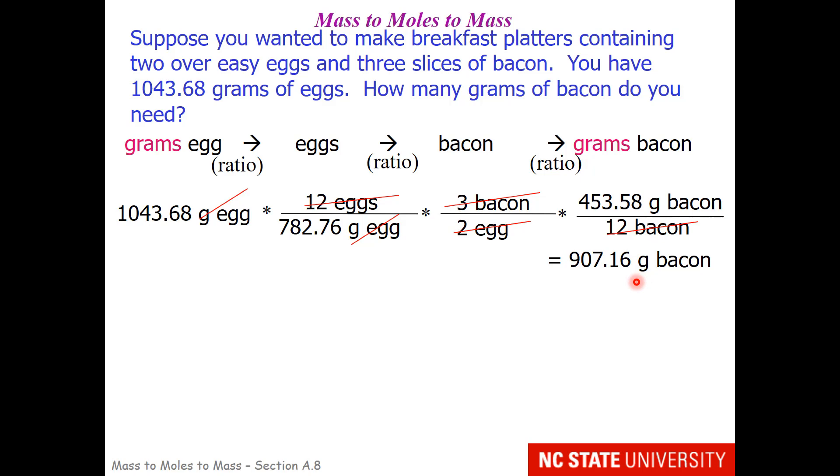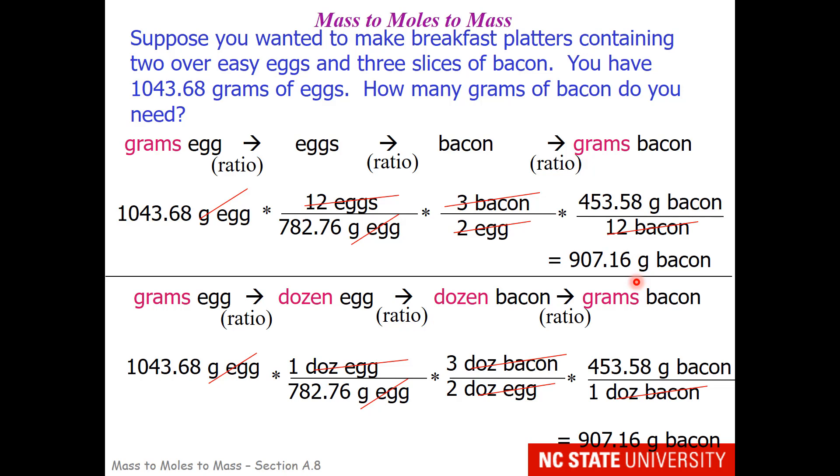So it takes three ratios to go from grams of eggs to grams of bacon. You can also do this with groups. I know many students are uncomfortable with the idea of the mole, but it does work out that if I work in groups, the statements are still true. It's true that one dozen eggs is this mass. It's true that you will have three dozen bacon to two dozen eggs. And it's true that one dozen bacon has this particular mass. So working in groups and canceling is just fine, so long as each of the ratios that you use is 1 divided by 1.